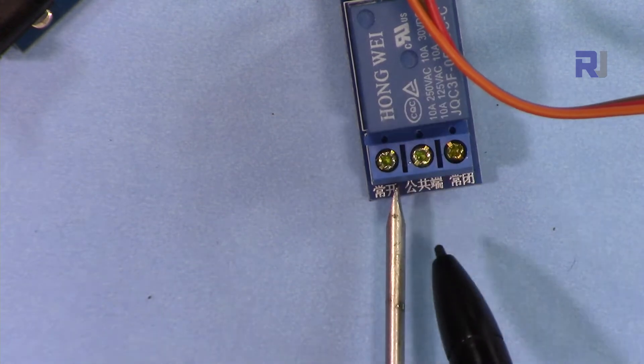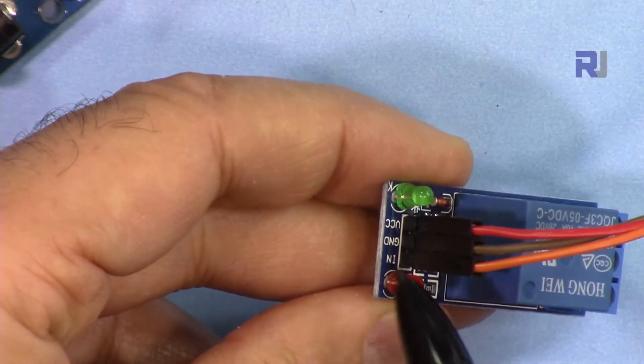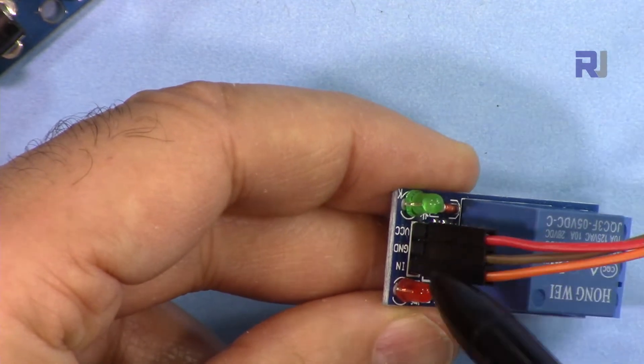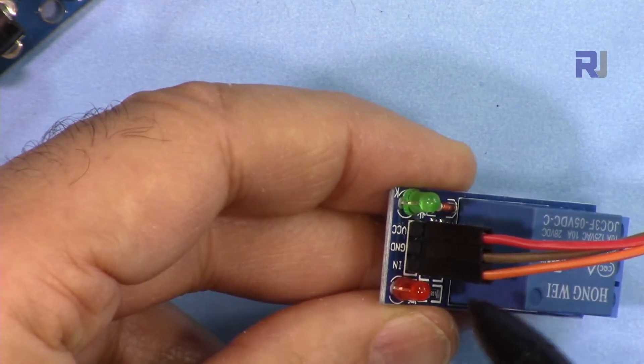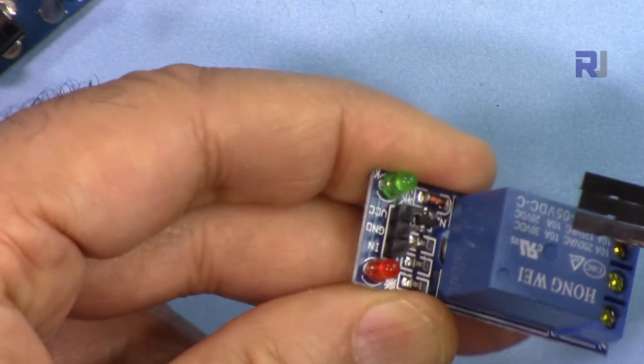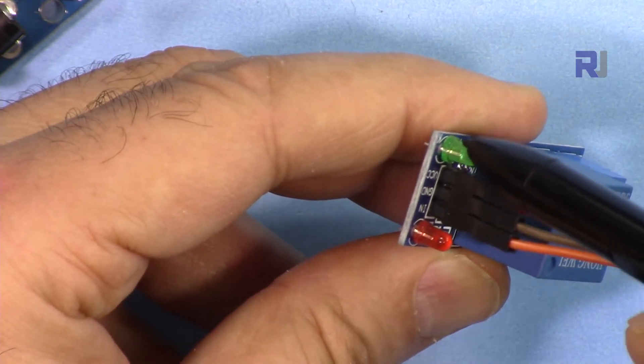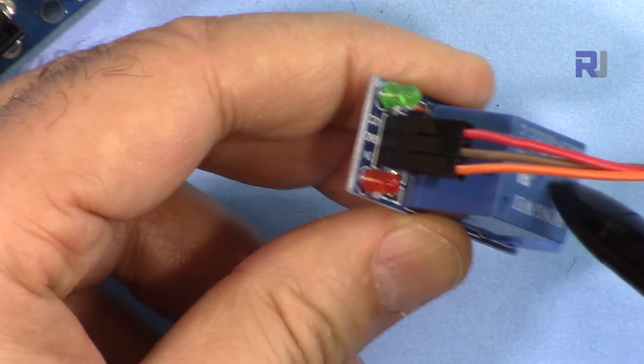On this side we have VCC which will be connected to 5 volts, ground will be connected to the ground, and IN will be connected to the input of your Arduino, which is pin 8. This green light will turn on when it receives signal and the relay is energized. The LED will turn on when you connect the relay to 5 volts.